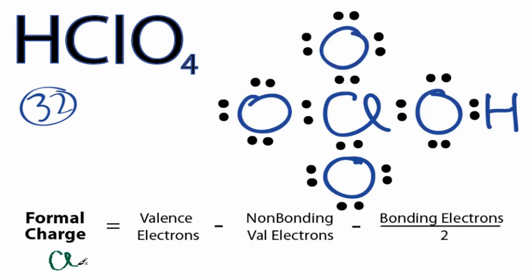For the central chlorine atom, we have 7 valence electrons on the periodic table, minus non-bonding. All these electrons here are bonding, so we have 0, minus bonding: 2, 4, 6, 8, that's 8 over 2. So our formal charge for that chlorine is +3.